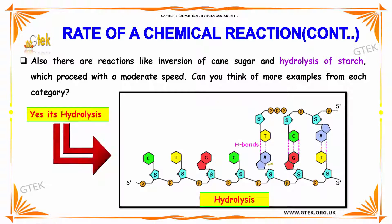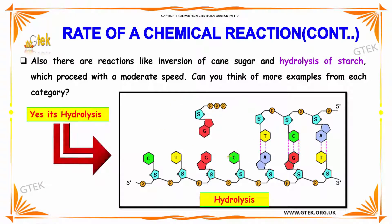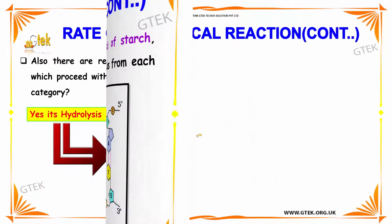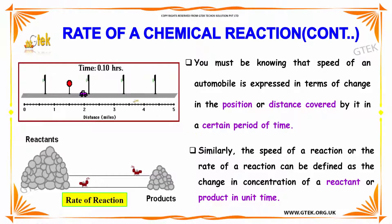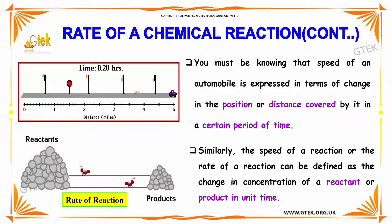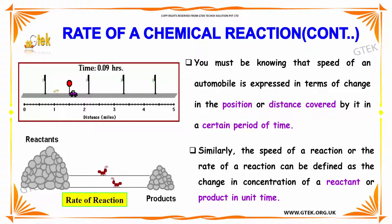Here is the hydrolysis process. You are able to see there is a hydrogen bond and there is a phosphorylation happening — this is referred to as hydrolysis. Just as the speed of an automobile is expressed in terms of change in position or distance covered in a certain period of time, similarly, the speed of a reaction or the rate of a reaction can be defined as the change in concentration of the reactants or products in a unit time.